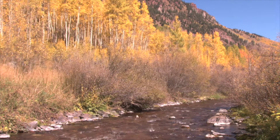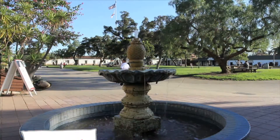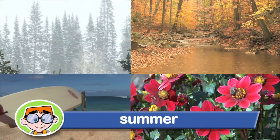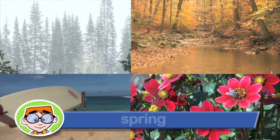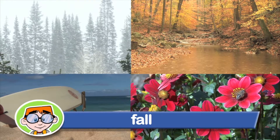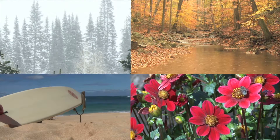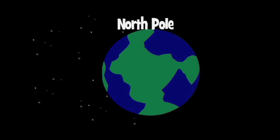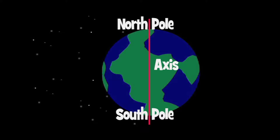In that one year, the seasons and the weather change many times. The sun controls the weather and four seasons on earth. The four seasons are summer, spring, winter, and fall. To understand how it works, you have to know a little bit more about the earth. At the top of the earth is the north pole. At the bottom of the earth is the south pole. There is an imaginary line called the axis that goes from the north pole through the earth to the south pole.